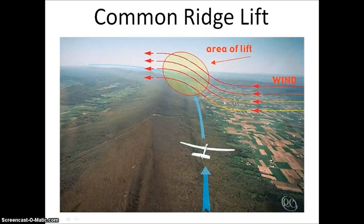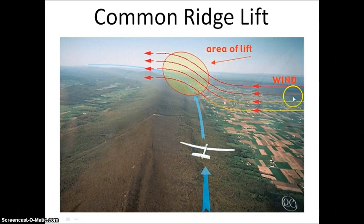All right, ridge lift. Another very common source of lift if you live near a mountain range. You have a ridge. You have wind that is within about 30 degrees, 30 to 45 degrees, the numbers vary. The more perpendicular it is to the mountain, the stronger, or the more efficient the wind will be. The stronger the wind, the stronger the lift, though.